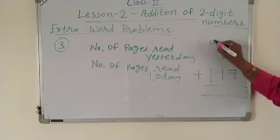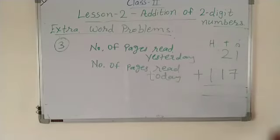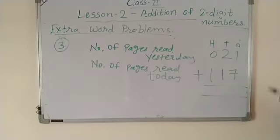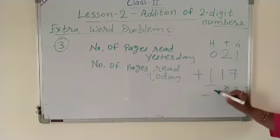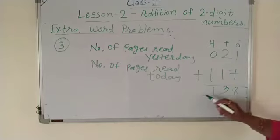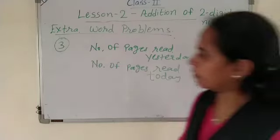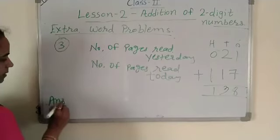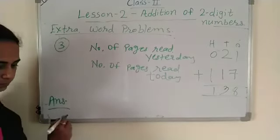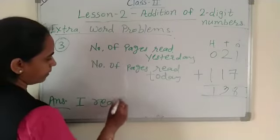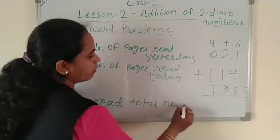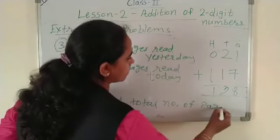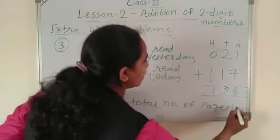Look at the ones, tens, and hundreds place. In the hundreds place there is nothing for 21, so put 0. Now add: 1 plus 7 is 8, 2 plus 1 is 3, 0 plus 1 is 1. So total number of pages read is 138. Write the answer: total number of pages is 138.